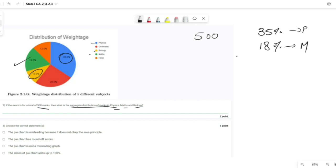So 10% goes to Biology. If the exam is 500 marks total, what is aggregate distribution of marks in Physics, Maths and Biology? Physics is 35% of 500 divided by 100.